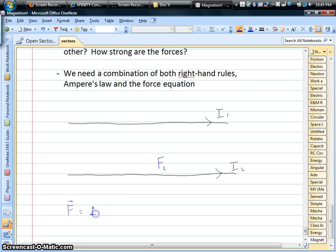We want the other version. We want IL cross B, where I is the current, L is the length of the wire that you're talking about, and B is the magnetic field that that current is experiencing.